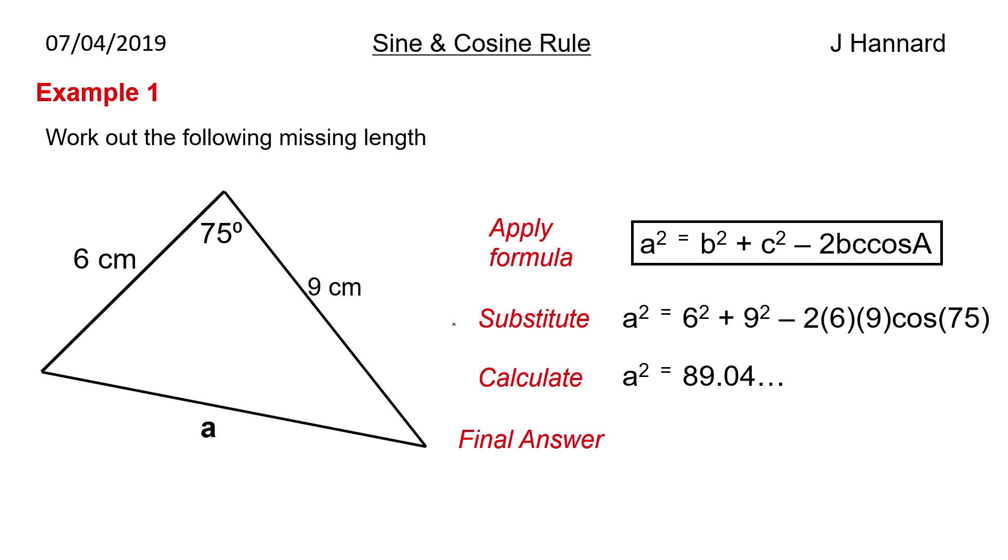So we calculate that, so a squared is 89.04 and then we square root it. So a, should be a little a there, but that equals 9.4 centimetres. Don't forget your units.